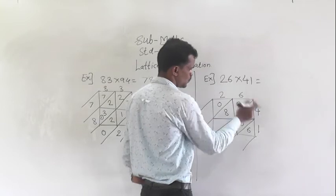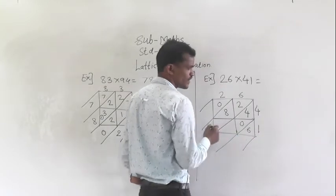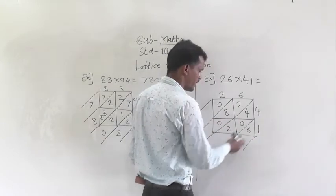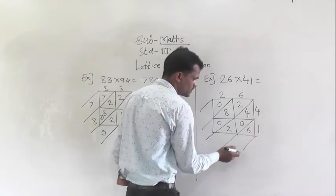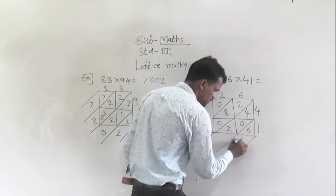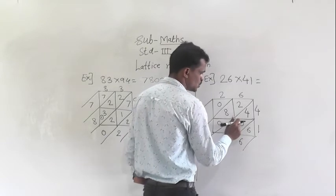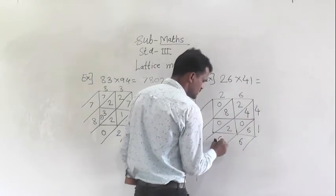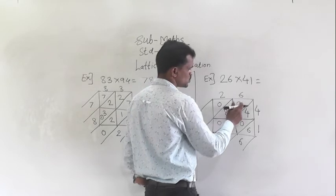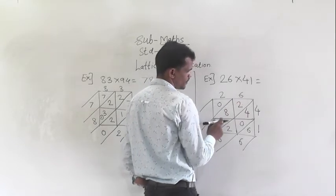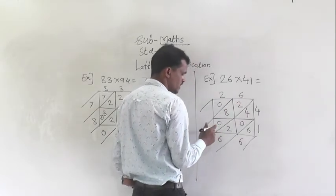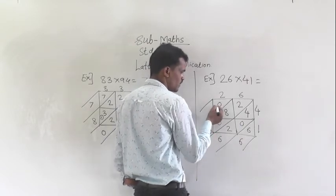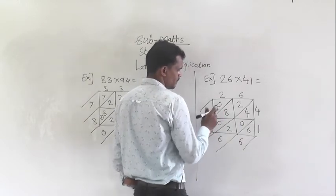Then 2 fours are 8, so write here 0, 8. Then 2 ones are 2, here also write 0, 2. Now add the columns starting from this side. Here 6. Then 2 plus 0 is 2, and 2 plus 4 is 6. Then here 8 plus 2 is 10, 10 plus 0 is 10. So 10 means write 0 right here and 1 carry to the next step.